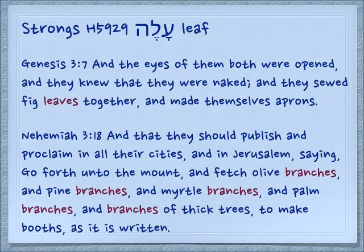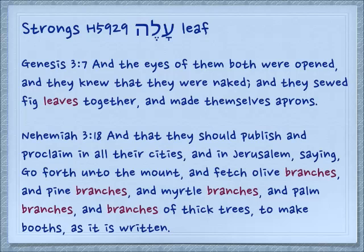Another word with a very related meaning is aleh, which means a leaf. Genesis 3:7 — 'And the eyes of them both were opened, and they knew that they were naked, and they sewed fig leaves together and made themselves aprons.' Someplace it's also translated 'branches.' Nehemiah 8:15 — 'And that they should publish and proclaim in their cities and in Jerusalem, saying, Go forth unto the mount and fetch olive branches, and pine branches, and myrtle branches, and palm branches, and branches of thick trees, to make booths, as it is written' — Nehemiah commending the people to honor Sukkot.